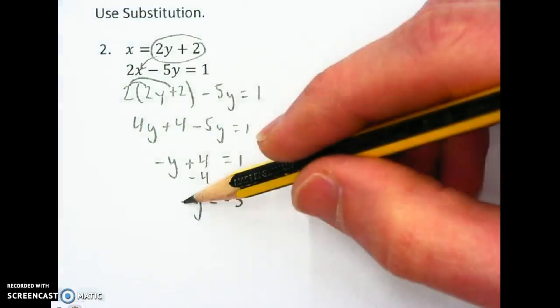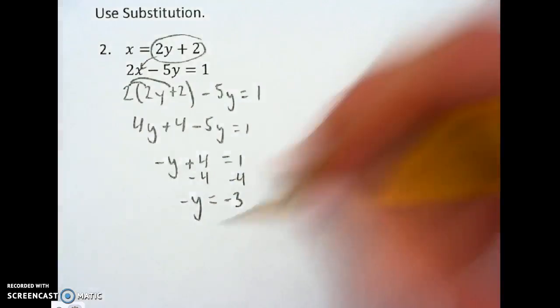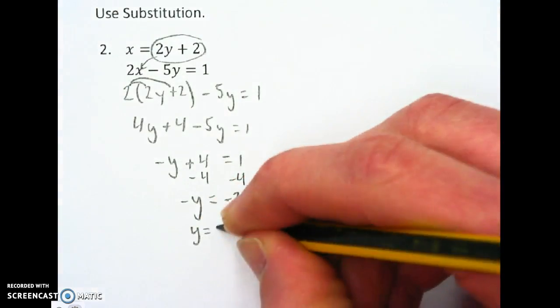And in order to get rid of the negative on the y, I change the symbol on both sides. So I've got y equals 3.